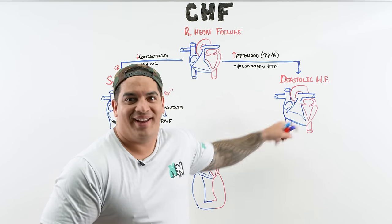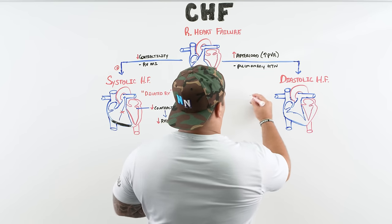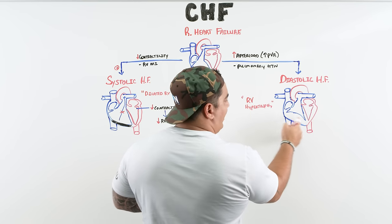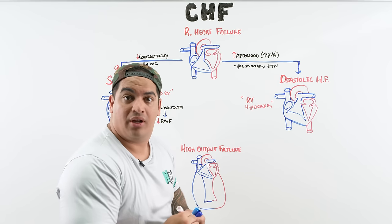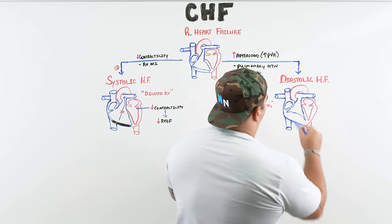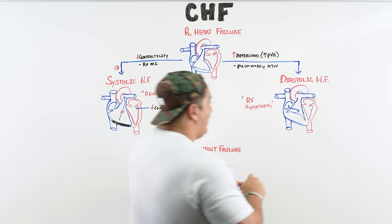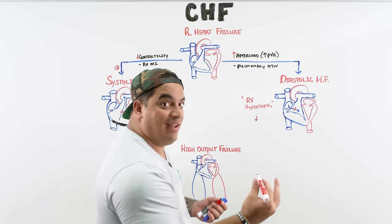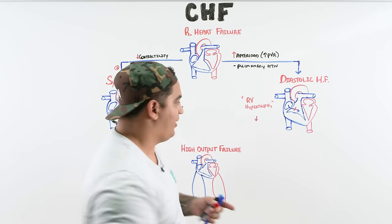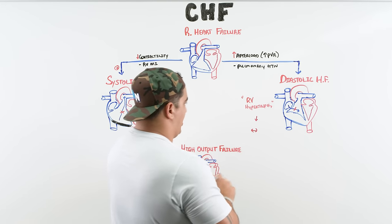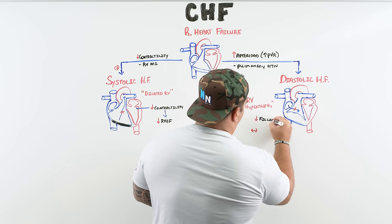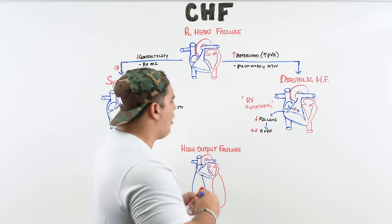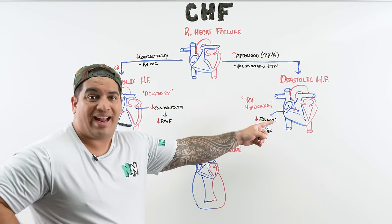With pulmonary hypertension, the right ventricle hypertrophies — right ventricular hypertrophy (RVH) — to overcome the elevated pressures. This thickening reduces the ability to fill, causing decreased right ventricular filling with a normal right ventricular ejection fraction. Both systolic and diastolic right heart failure produce reduced right ventricular cardiac output, just through different mechanisms.